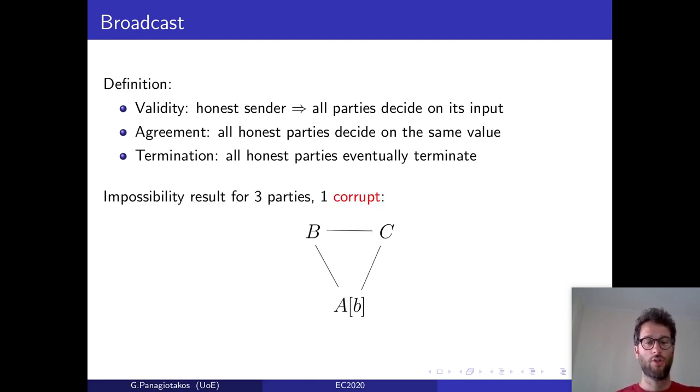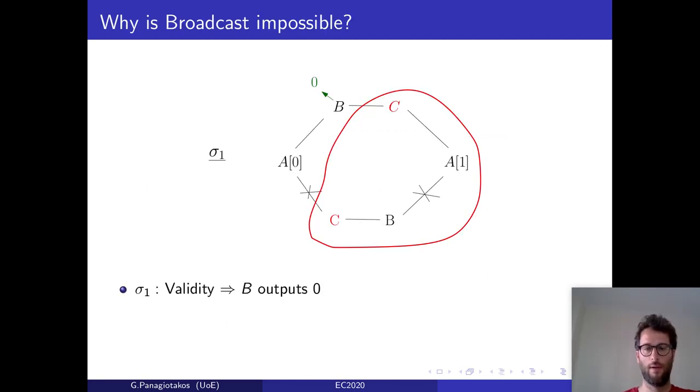Now, the impossibility result we mentioned assumes that a third of the parties can be corrupted. We'll briefly describe the attack strategy of the impossibility result for three parties, A, B, and C, where A is the sender sending bit b, and one of them is corrupt. The impossibility result proceeds by defining three scenarios, sigma 1, sigma 2, and sigma 3, such that no protocol can satisfy all broadcast properties in all three scenarios.